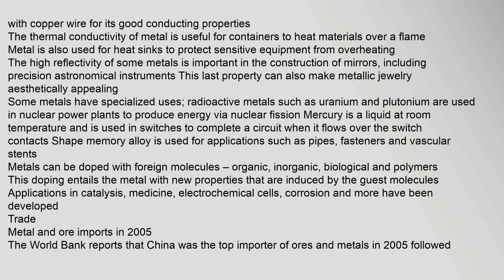Some metals have specialized uses. Radioactive metals such as uranium and plutonium are used in nuclear power plants to produce energy via nuclear fission. Mercury is liquid at room temperature and is used in switches to complete a circuit. Shape memory alloy is used for applications such as pipes, fasteners, and vascular stents. Metals can also be doped with foreign molecules — organic, inorganic, biological, and polymers — giving the metal new properties induced by the guest molecules, with applications in catalysis, medicine, electrochemical cells, and corrosion prevention.